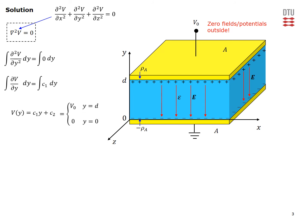The two unknown integration constants can be determined by applying the boundary conditions for the potential. The Y axis is introduced so that the lower plate is at Y equal to zero and the upper plate is at Y equal to d. At the upper plate the potential must equal V0, so our potential must recover V0 when Y equals d. Our potential must recover zero when Y equals zero. This gives two equations in two unknowns, allowing us to determine the constants C1 and C2, and very easily arrive at the final result for the potential in the parallel plate capacitor.